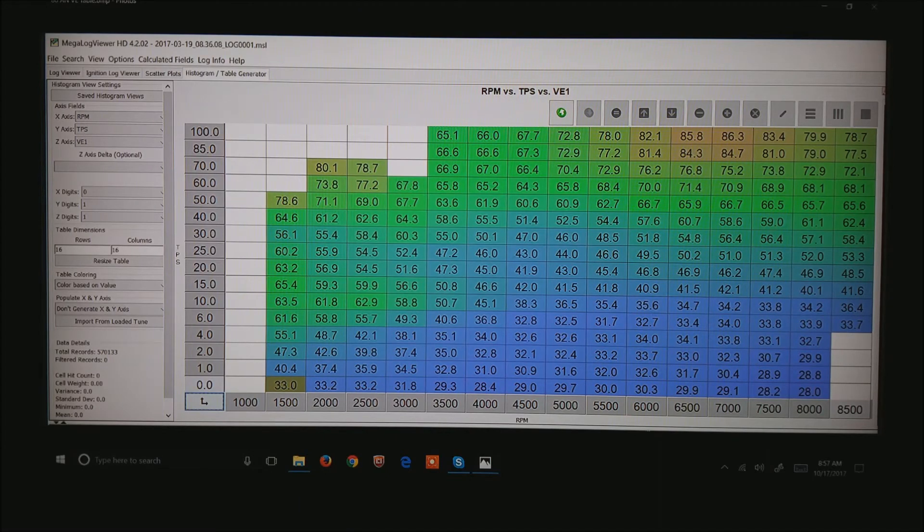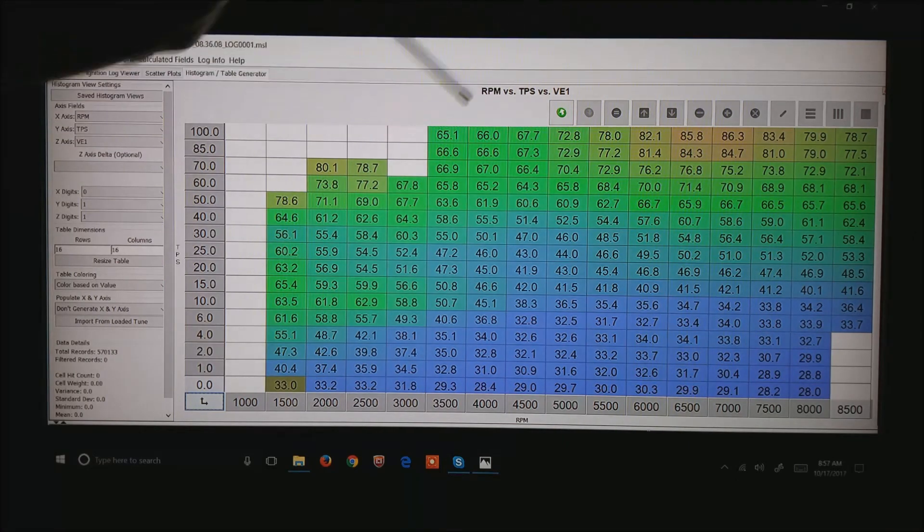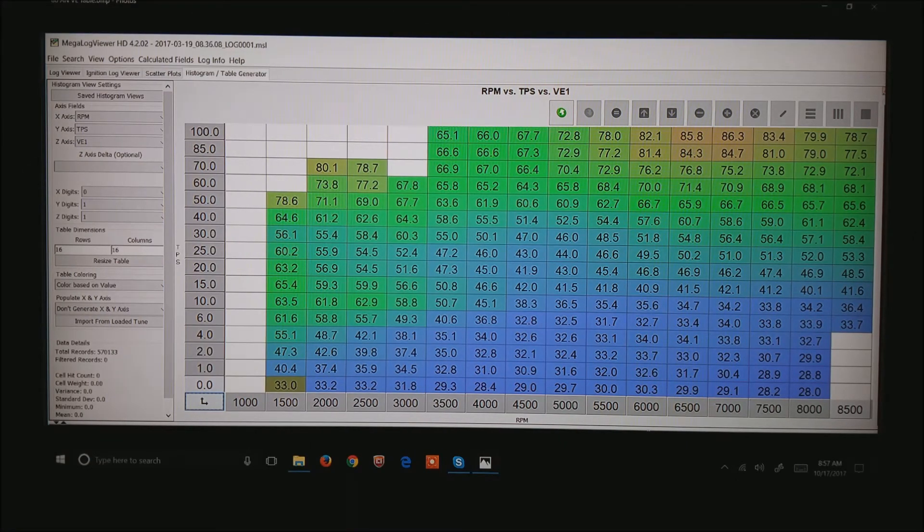What I've done is used the table generator in Megalog Viewer HD to generate along the bottom axis is RPM, throttle position is in the vertical axis, and in the middle is the volumetric efficiency. Notice that the range that I have to go with the TPS from 0 to 1 degree, 2 degrees, 4, 6 degrees, very small increments on the bottom end.